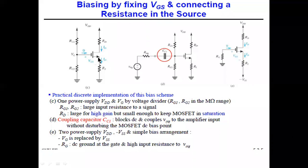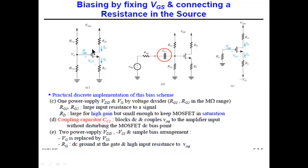The MOSFET has infinite input impedance, unlike the BJT which has finite input impedance. This is very important: infinite input impedance means gate current IG is always zero. In a BJT, base current IB is non-zero, but in a MOSFET, IG is always zero. Because IG = 0, very large biasing resistors can be used, which is not possible in BJT circuits.